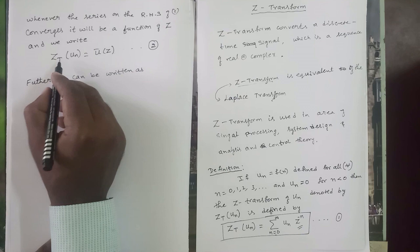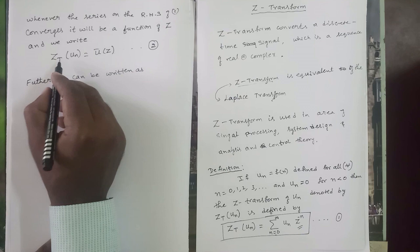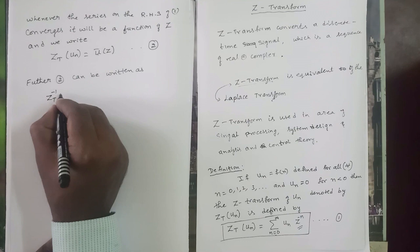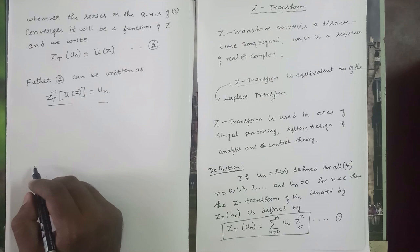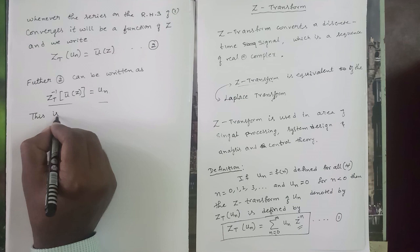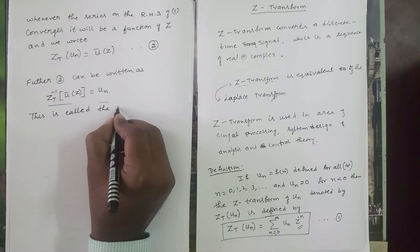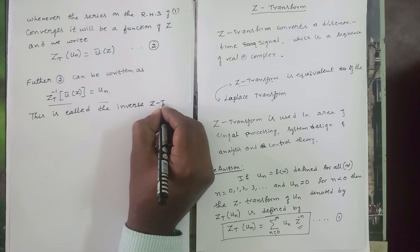Equation 2 can also be written as: the inverse Z-transform of ū(z) equals u_n. This is called the inverse Z-transform.